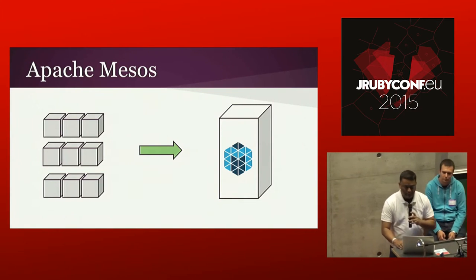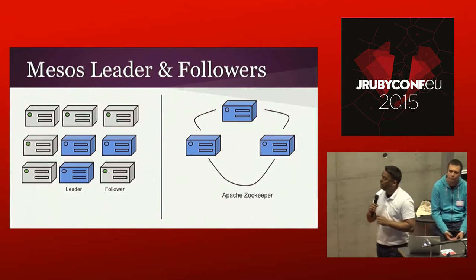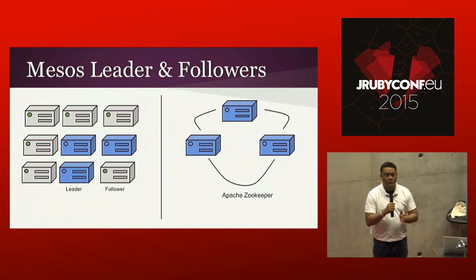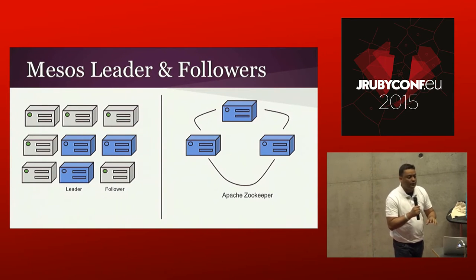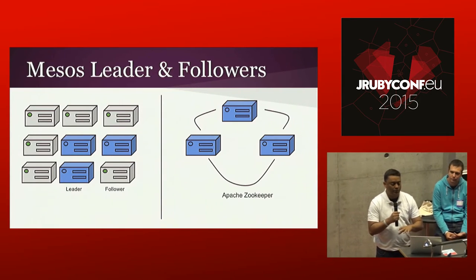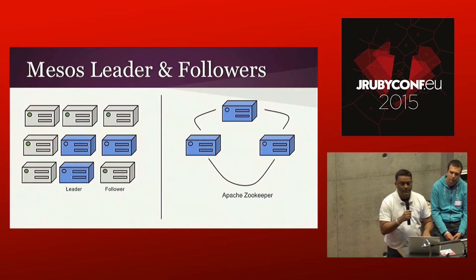At a high level, Mesos has the concept of leaders and followers. The leader is a server — or a bunch of servers — that handles requests and distributes the load to the follower nodes. It is recommended to have at least three leaders so that if one goes down, your application is still available. You can have anywhere from five to five thousand follower nodes.